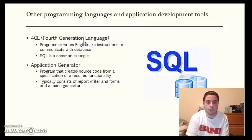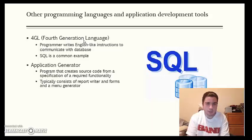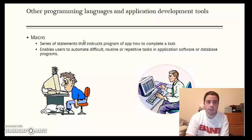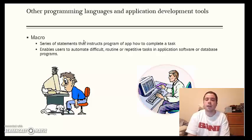Some other programming languages and app development tools. 4GL, also known as fourth generation language. It's a non-procedural language with which programmers write English-like instructions to communicate with the database. SQL is a common example that you saw in Microsoft Access. An application generator is a program that creates source code from a specification of a required functionality. And it typically consists of a report writer, forms, and a menu generator. A macro is a series of statements that instructs programs or app of how to complete a task. It enables users to automate difficult, routine, or repetitive tasks in application software or database programs. It's commonly found in Microsoft Excel.